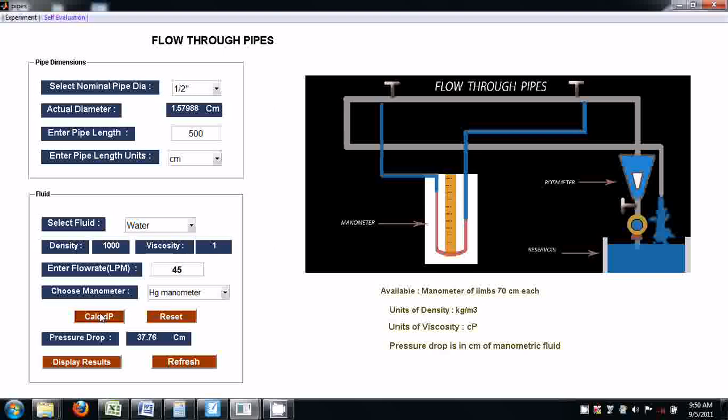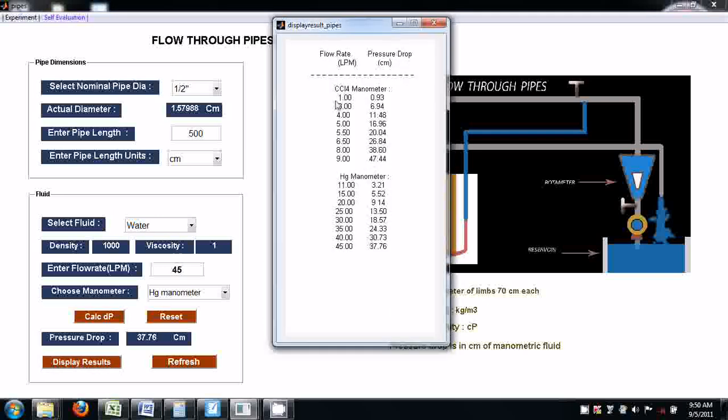Now all these readings can be seen by clicking display results. What are the flow rates you have done experiment with and their corresponding pressure drops? Students are supposed to calculate Reynolds number and friction factor with these results.